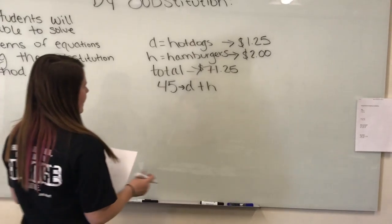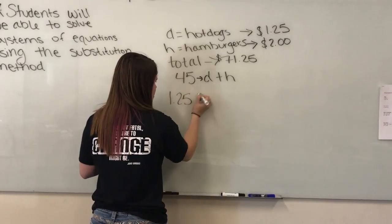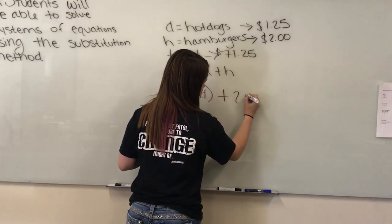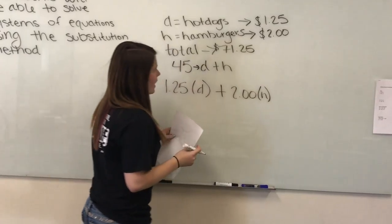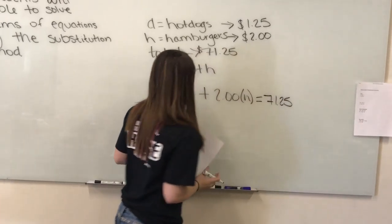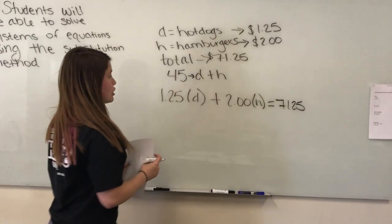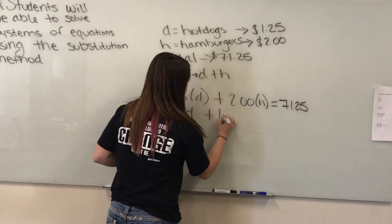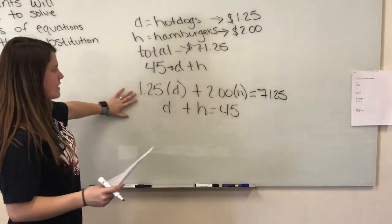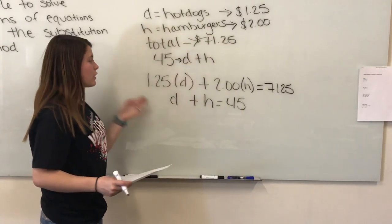Now I can form equations. Knowing the cost per item: 1.25d plus 2h equals 71.25 represents the total amount spent. And d plus h equals 45 represents the total number of hot dogs and hamburgers combined. Now you can solve this system of equations by isolating one of the variables.